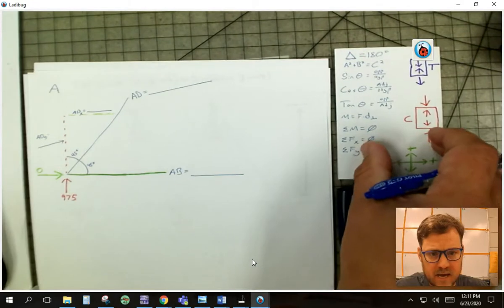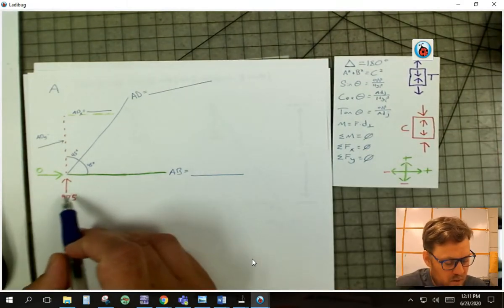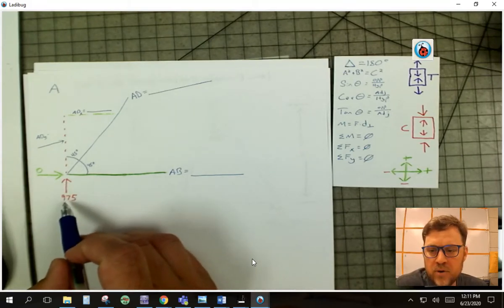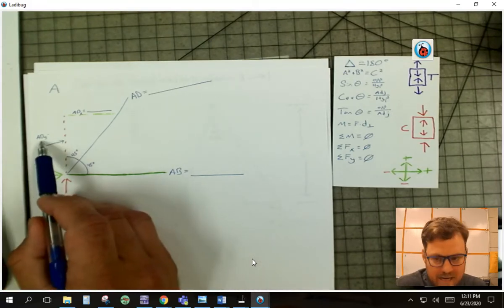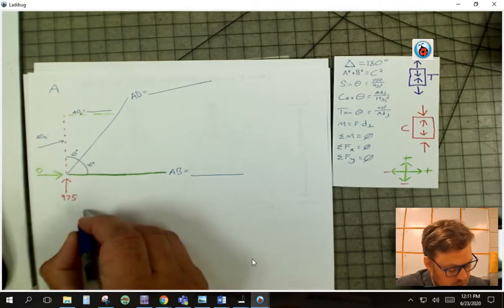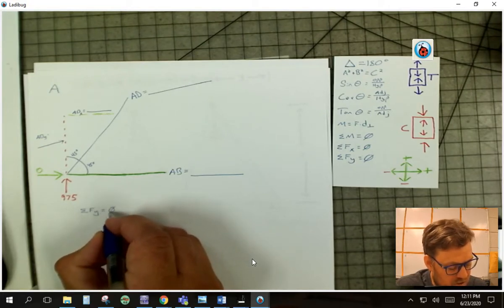So I've got this chart here and the first thing I look is what do I know, what do I need to know. And when I look here I've got a known in the Y and I've got ADY that I don't know, and so I can sum of the forces in the Y, remember, has to equal zero.